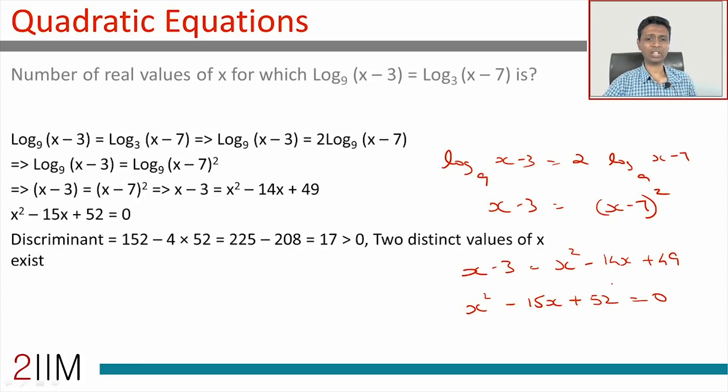Whatever x satisfies this, we are through. First, this is a quadratic equation, so let's think: is there a real solution possible? The discriminant, which is b² - 4ac, is 15² - 4(52), which is 225 minus 4(52).